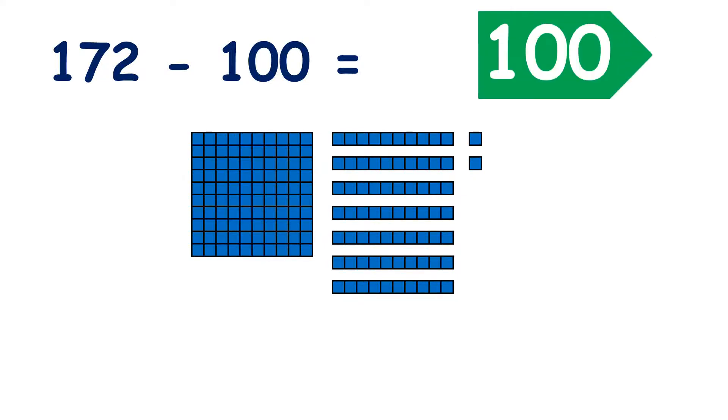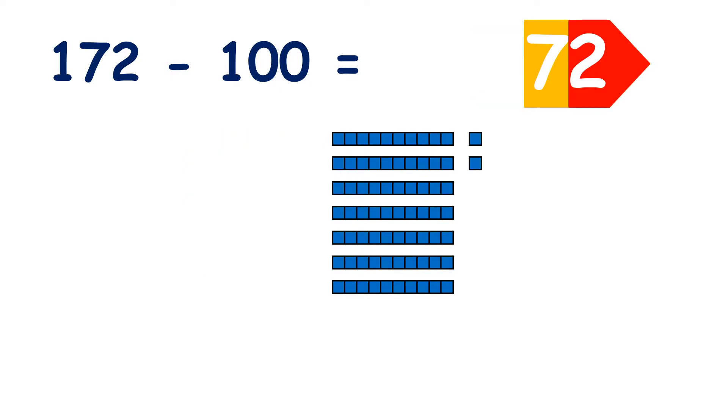Here we have 100, 7 tens and 2 units, so we have 172. If we take away 100, now we only have 7 tens and 2 units, so we have 72.